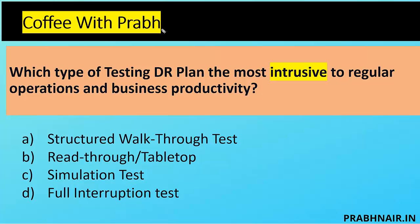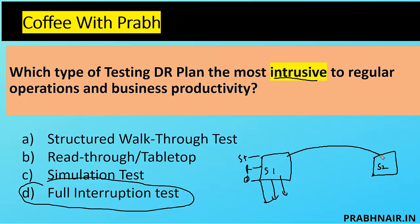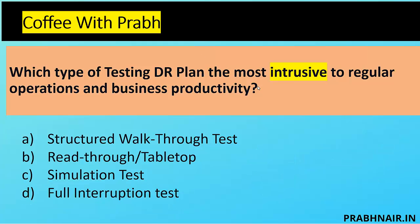Which type of DR testing plan is most intrusive to regular operations and business productivity? Options A, B, C are removed. The answer is D, full interruption, because it is performed on the primary site. Structure walkthrough, read-through, and simulation are all done at site one. Parallel test is done at the alternate site. Full interruption is performed at the primary site where we shut down the server and check whether we can restore — making it the most intrusive.